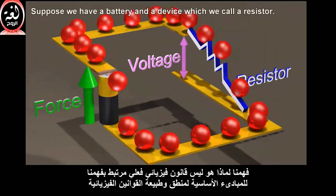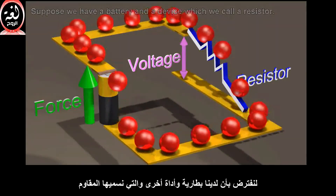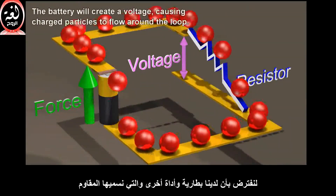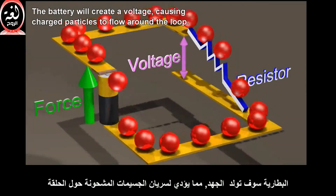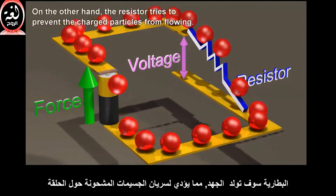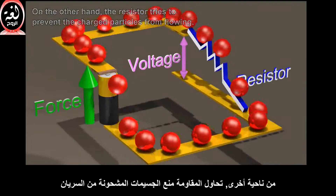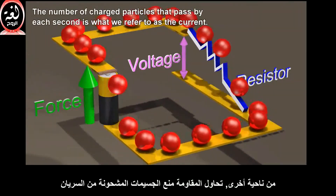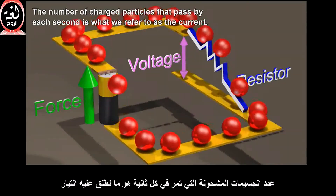Suppose we have a battery and a device which we call a resistor. The battery will create a voltage, causing charged particles to flow around the loop. On the other hand, the resistor tries to prevent the charged particles from flowing. The number of charged particles that pass by each second is what we refer to as the current.